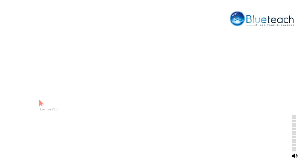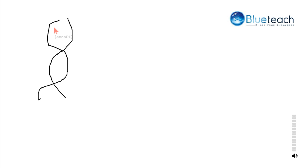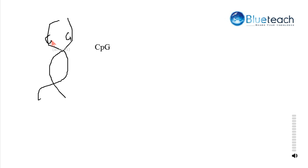To explain methylation of DNA, let me draw a diagram. This is a double helical model of DNA. The nitrogenous bases present are adenine, guanine, cytidine, and thymine. Cytidine base-pairs with guanine, and this exists as a dinucleotide represented as CpG. These two are linked with the help of hydrogen bonds, and the cytidine residue serves as a site for methylation — that is, the addition of a methyl group.